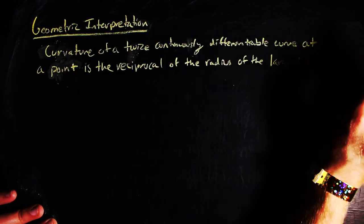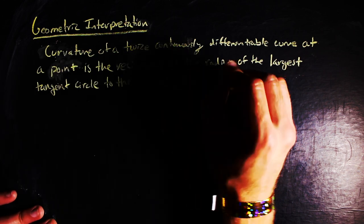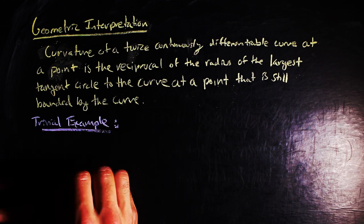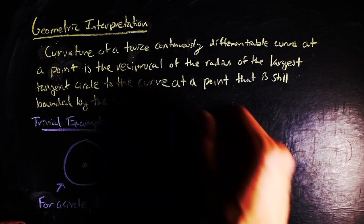Now, this isn't a definition, but it's the geometric intuition behind what curvature is. This makes the circle example from earlier make a little bit more sense, as the largest circle that is tangent to a circle and bounded by it is just itself.